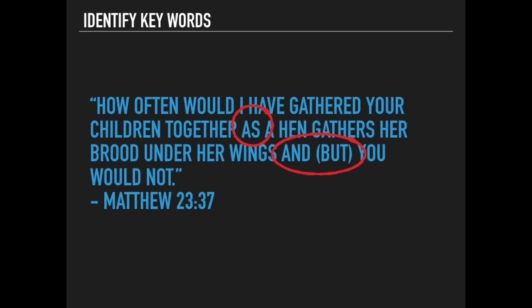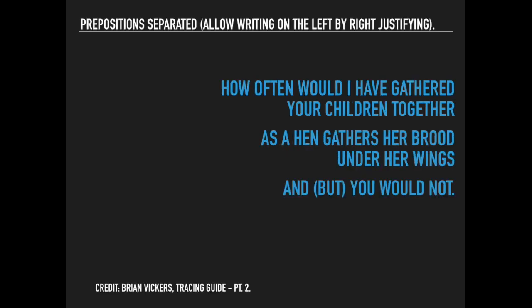So how often would I have gathered your children together? And then, as a hen gathers her brood under her wings — there's a comparison between Jesus gathering the children together and a hen gathering the chicks under her wings. And then you have the response to that: and you would not. So you should have three propositions. One: how often would I have gathered your children together? Two: as a hen gathers her brood under her wings. Three: and you would not. So you write, justify it, and then we start connecting. We connect the first things first: how often would I have gathered your children together as a hen gathers her brood under her wings — that's a comparison.